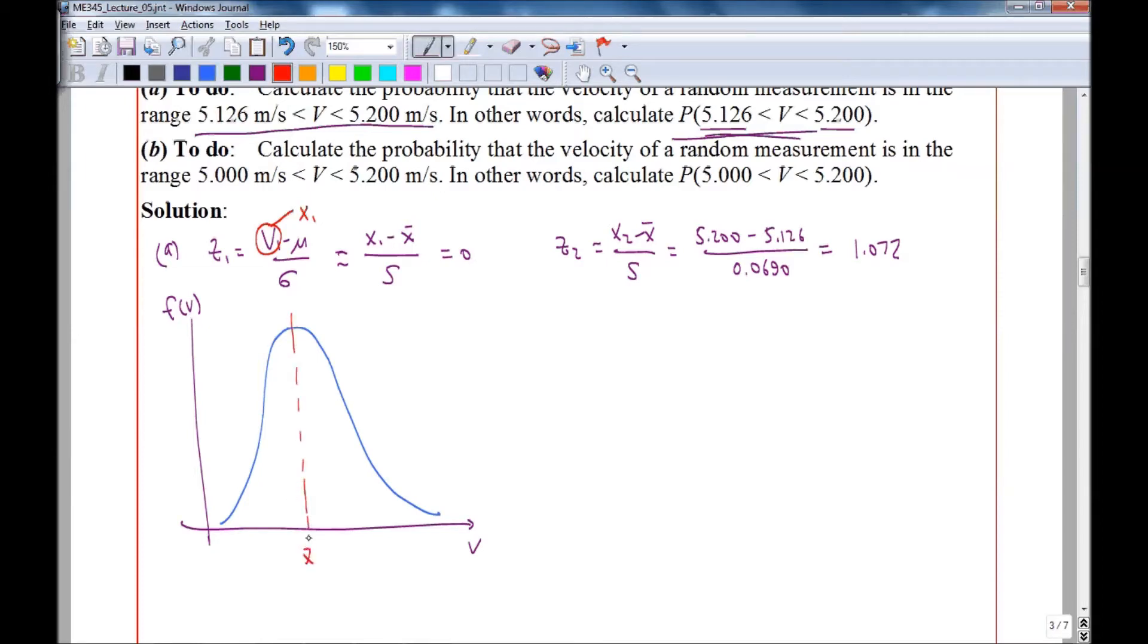This I'll call X bar. And then X1 is actually equal to X bar. And X2 is somewhere over here. And the area that we're interested in is this area. This is the probability that X1 is less than X is less than or equal to X2.